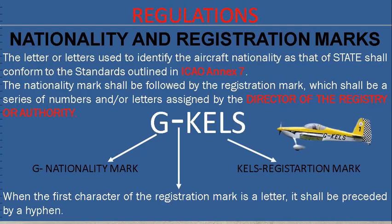For example, a tail number is given as Golf-Kilo-Echo-Lima-Sierra. Golf is the nationality mark, allotted by the International Telecommunication Union to the United Kingdom, and Kilo-Echo-Lima-Sierra is the registration mark. When the first character of a registration mark is a letter — in our example it is Golf — it shall be preceded by a hyphen, so the tail number is Golf-hyphen-Kilo-Echo-Lima-Sierra.